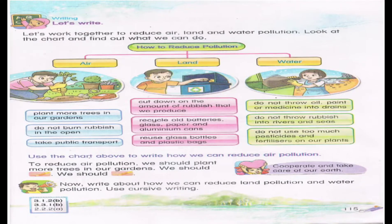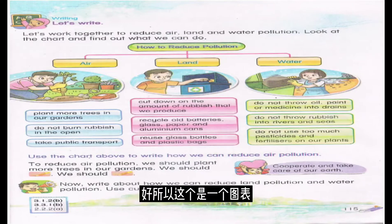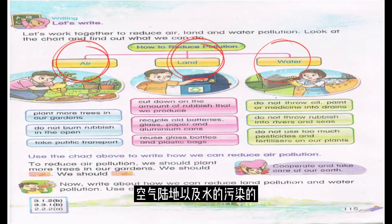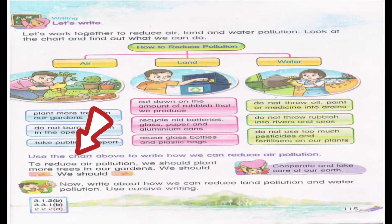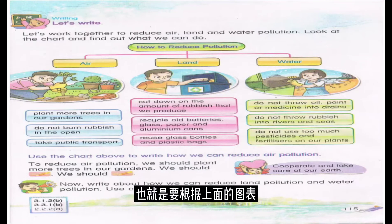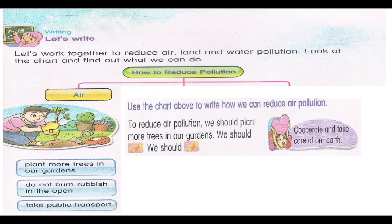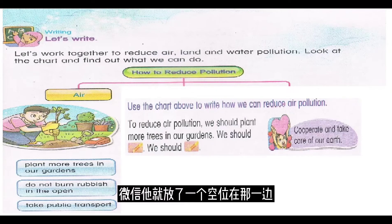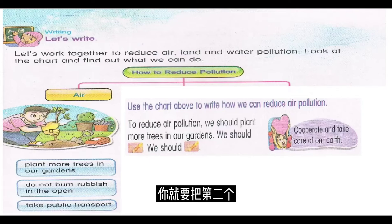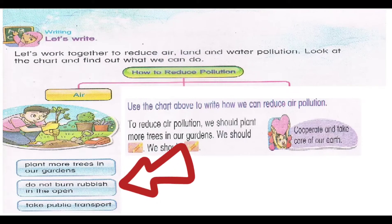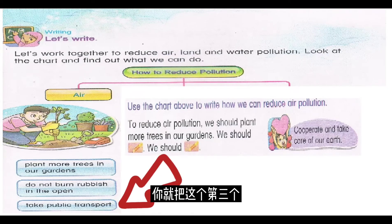Let's work together to reduce air, land, and water pollution. Look at the chart and find out what we can do to prevent air, land, and water pollution. Use the chart to write how we can reduce air pollution. To reduce air pollution, we should plant more trees in our garden. The first answer has already been written for you. The second one is: we should not burn rubbish in the open. The third is: we should take public transport.